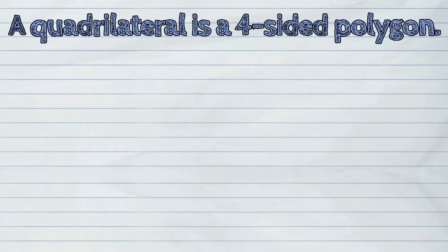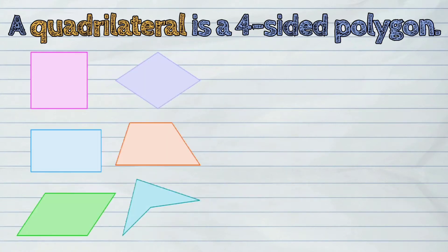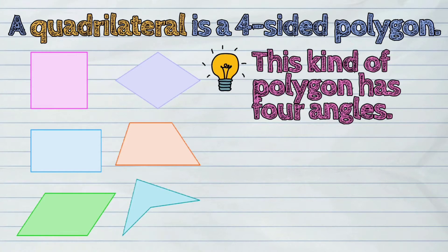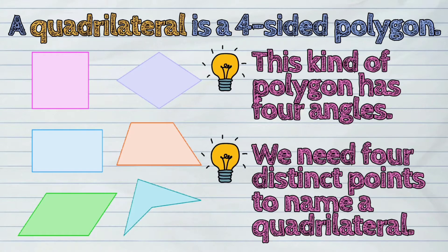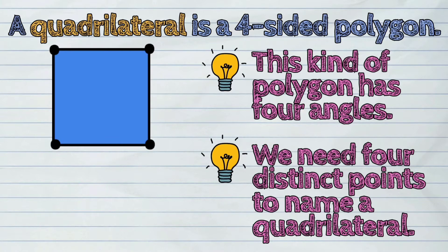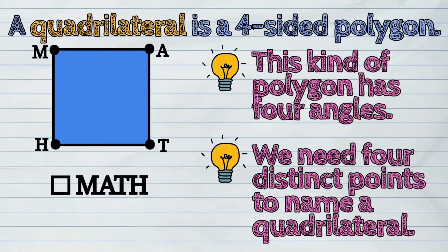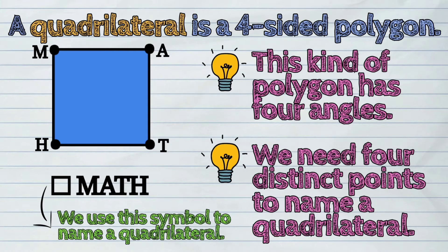A quadrilateral is a four-sided polygon. This kind of polygon has four angles. We need four distinct points to name a quadrilateral. For example, this quadrilateral is square M-A-T-H. We use this symbol to name a quadrilateral.